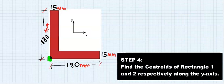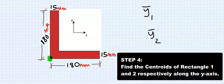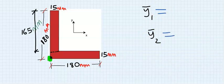Step number 4 is to find the centroid of each of the rectangles along the Y axis. For the Y axis, for rectangle 1 and this is rectangle 2.